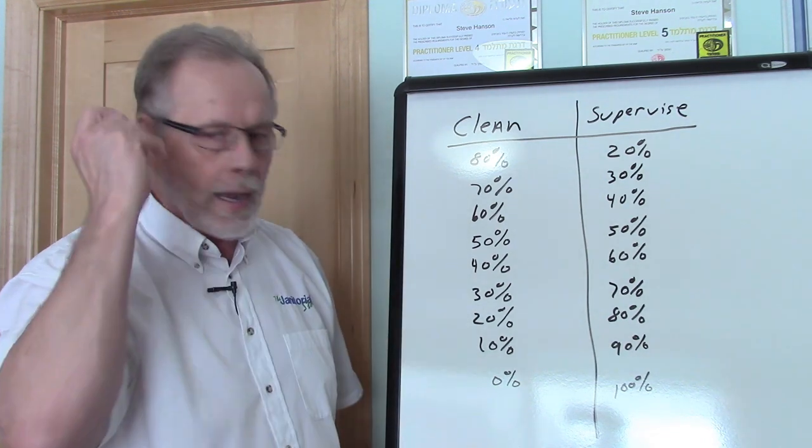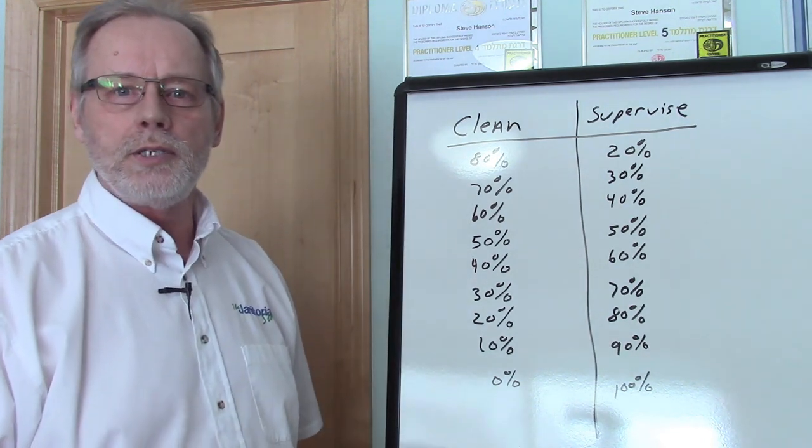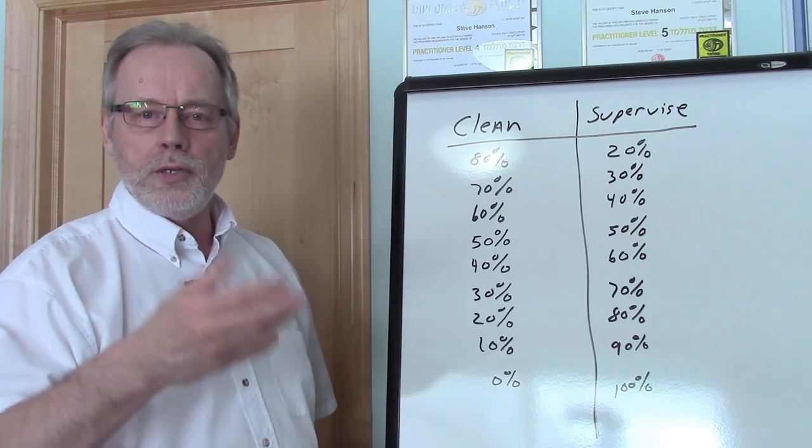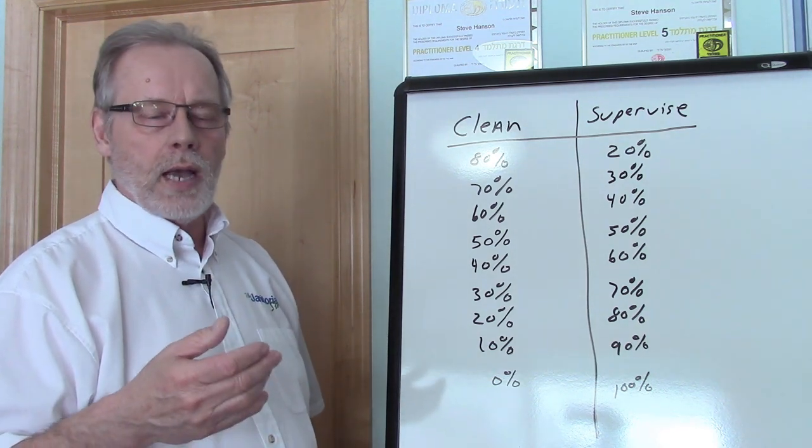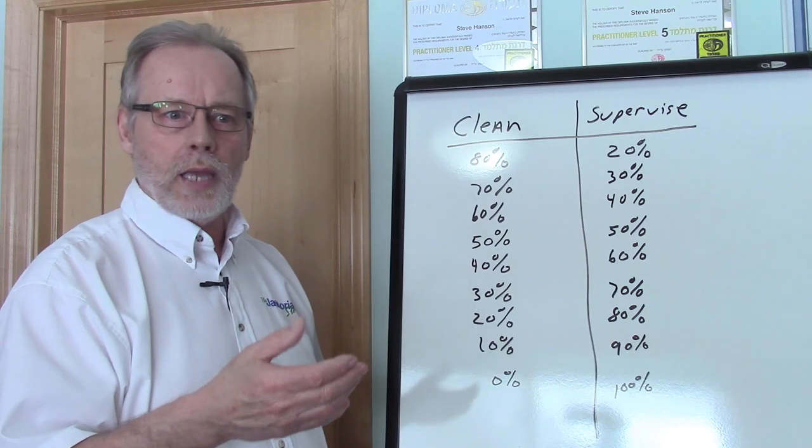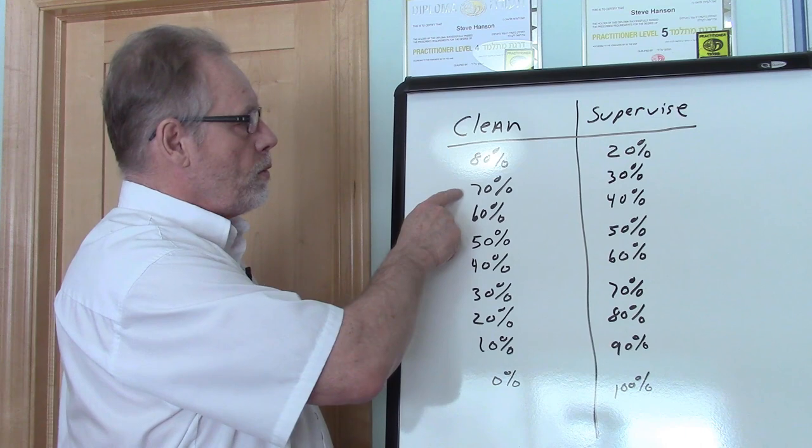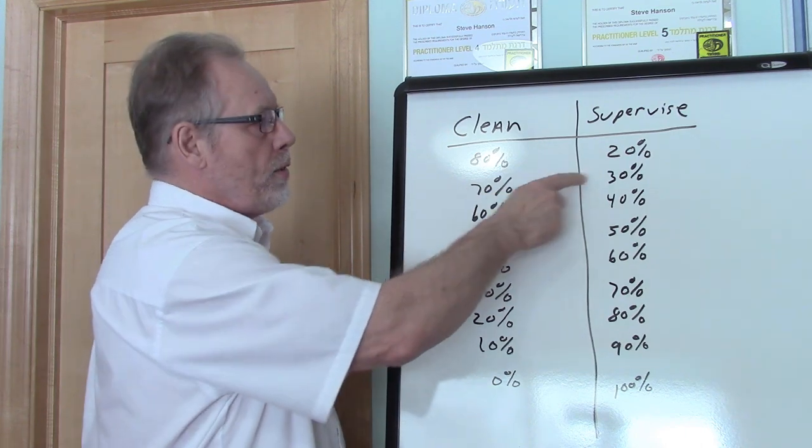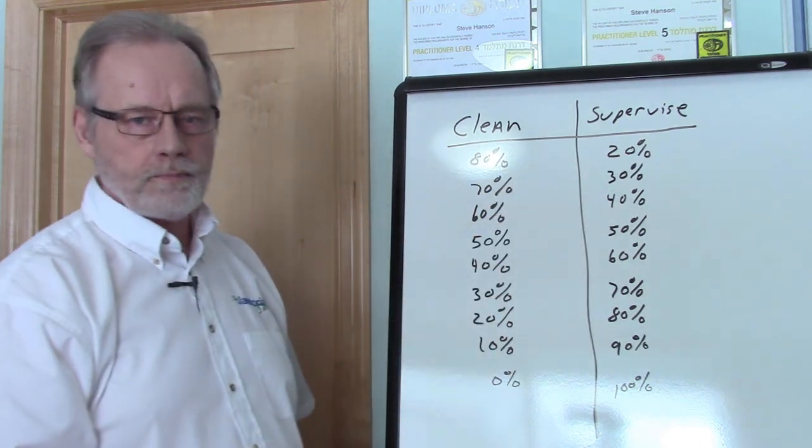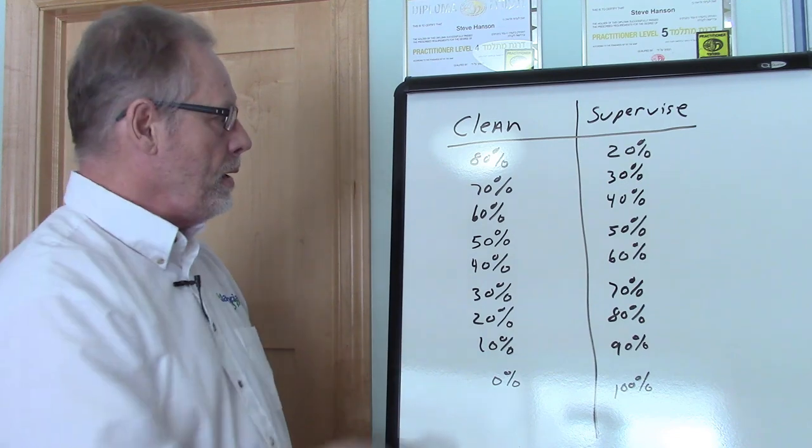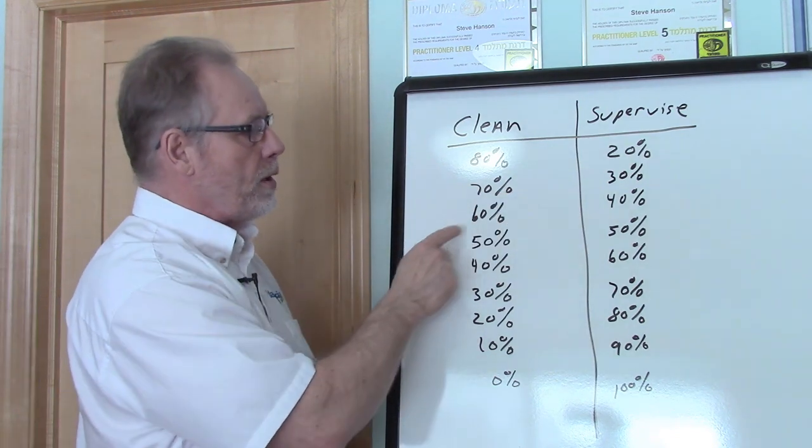I'll give them more locations or more team members, then move them up to 70% cleaning, 30% supervising. I'll continue to do that until the person is doing 60/40, then 50/50. At this point, we've probably got a pretty good chance with that supervisor.